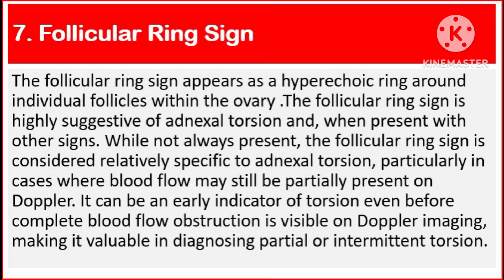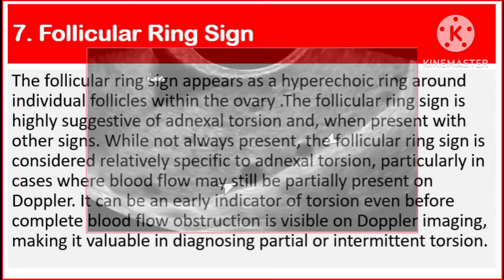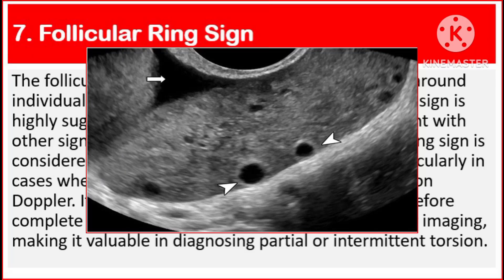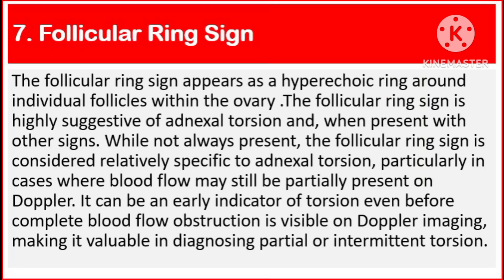Number 7: Follicular ring sign. The follicular ring sign appears as a hyperechoic ring around individual follicles within the ovary. It is highly suggestive of adnexal torsion when present with other signs. While not always present, the follicular ring sign is considered relatively specific to adnexal torsion, particularly in cases where blood flow may still be partially present on Doppler. It can be an early indicator of torsion even before complete blood flow obstruction is visible, making it valuable in diagnosing partial or intermittent torsion.